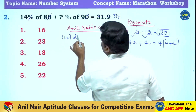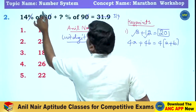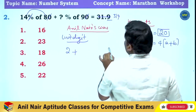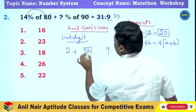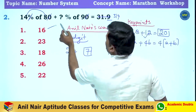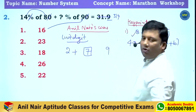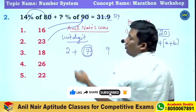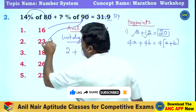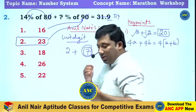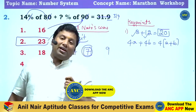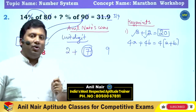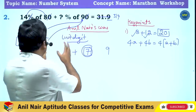Now use the unit digit logic. 4 eights are 32 — unit digit is 2. The result unit digit is 9, so the answer unit digit should be 7. Six nines are 54 — unit digit 4; three nines are 27 — unit digit 7. So the answer to this question is 23. Unit digit logic gives you the answer in the least possible time.